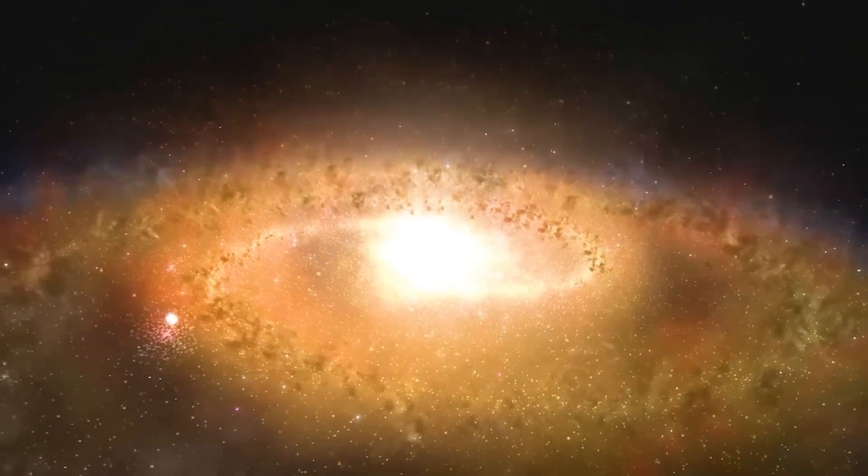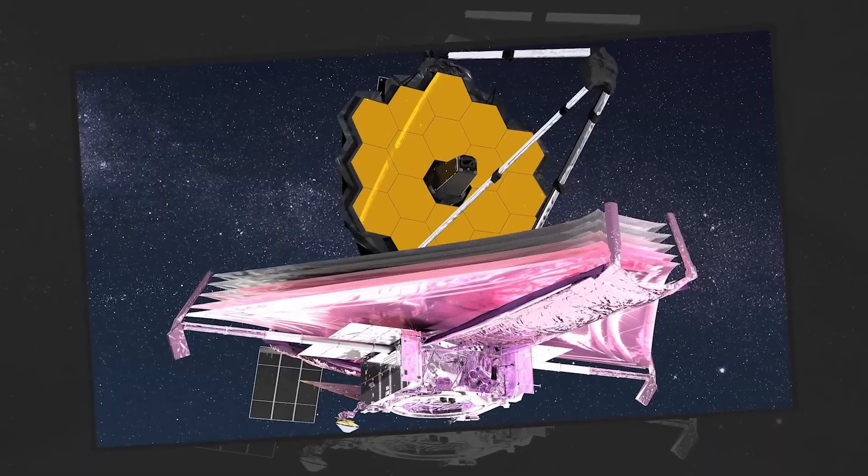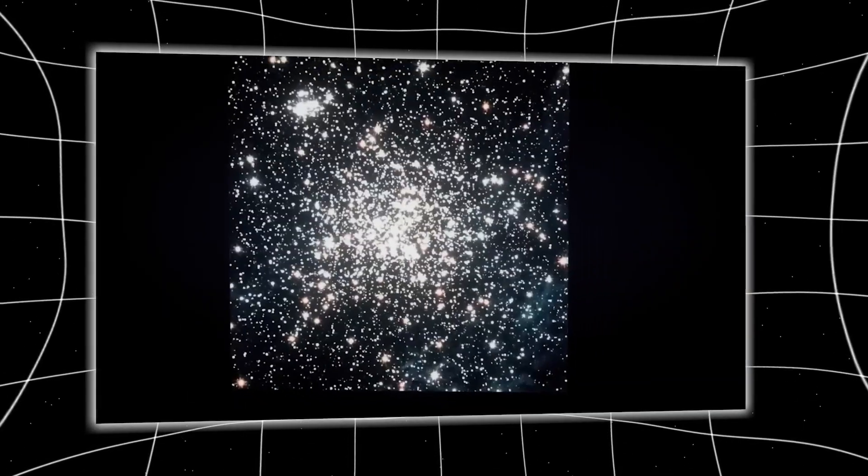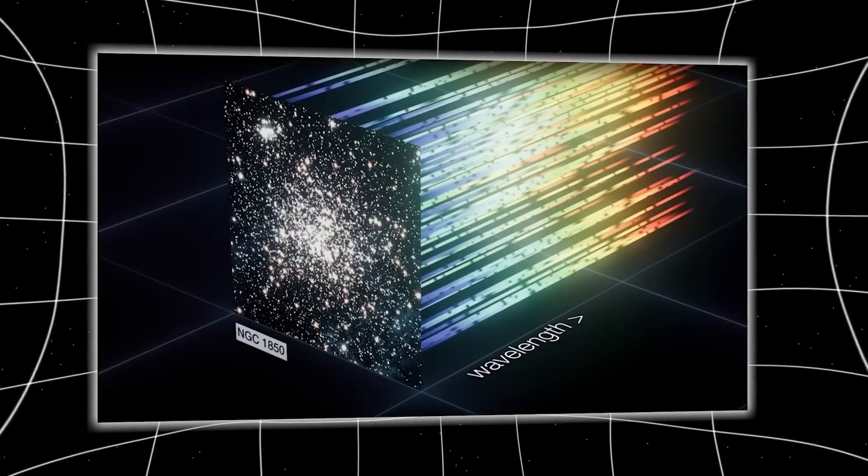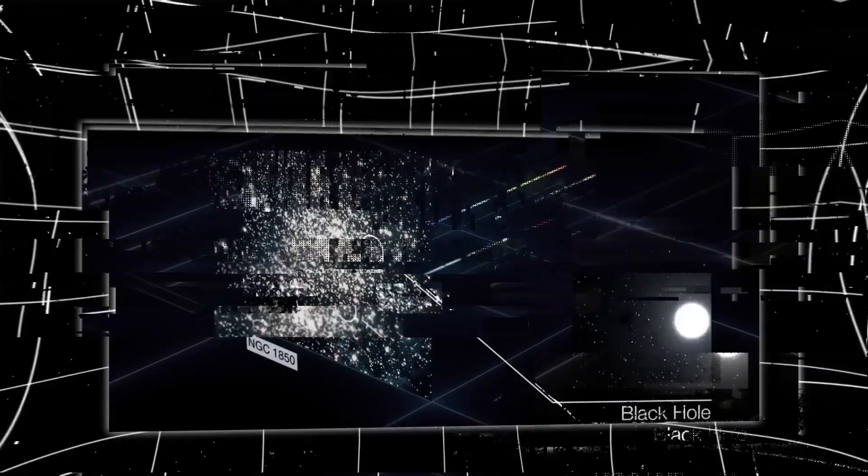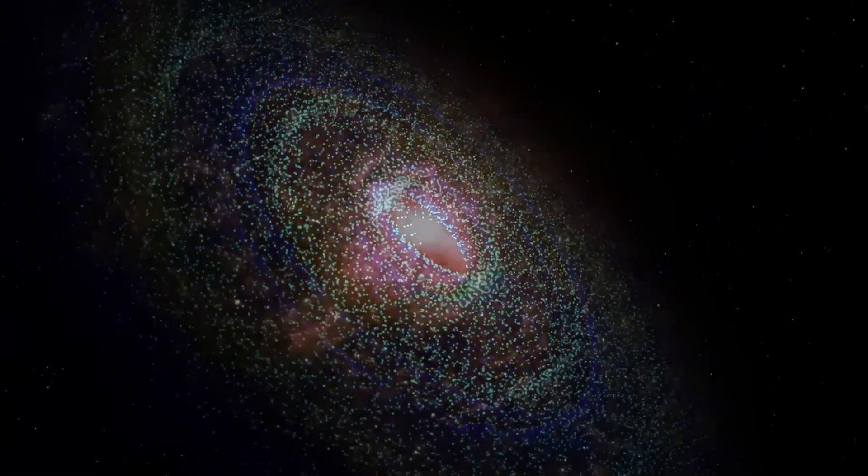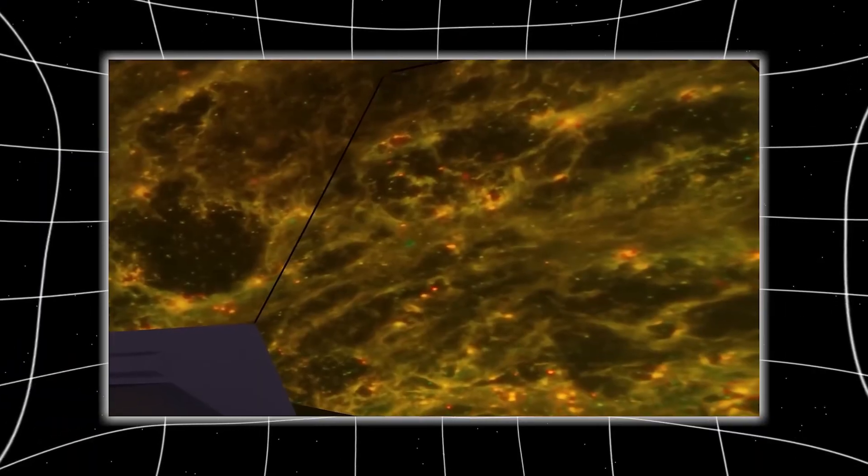The surprises didn't stop there. Galaxies with such intense star formation almost always have a supermassive black hole at their core. These central giants help regulate star birth, influence galactic structure, and shape the evolution of their host galaxies.